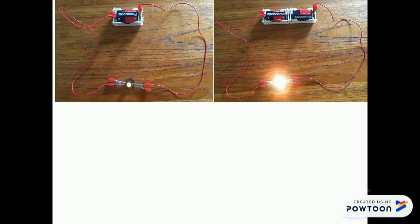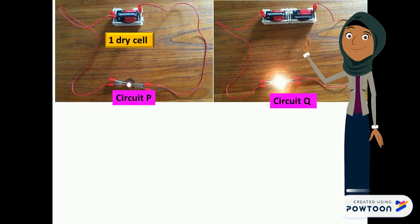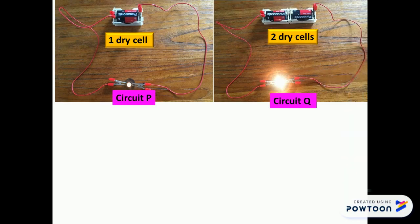Let's compare between these two circuits, circuit P and circuit Q. We can see that in circuit P it has only one dry cell, while in circuit Q it has two dry cells. So, what is the manipulative variable for this test? You can pause this video to think before you answer.